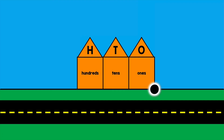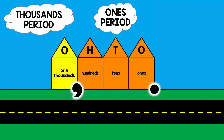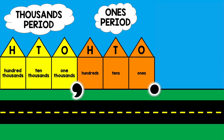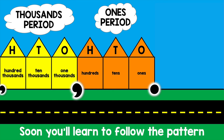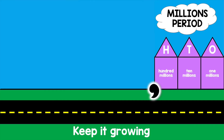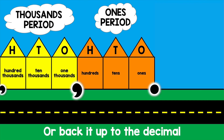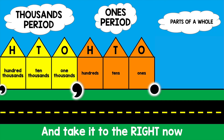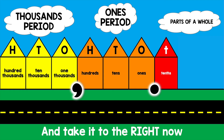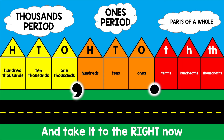Ones, tens, hundreds — a comma splits the periods. One-thousands, ten-thousands, hundred-thousands, comma. Soon you'll learn to follow the pattern and keep it growing — millions, billions, trillions. But back it up to the decimal and take it to the right now. Tens, hundreds, thousands.